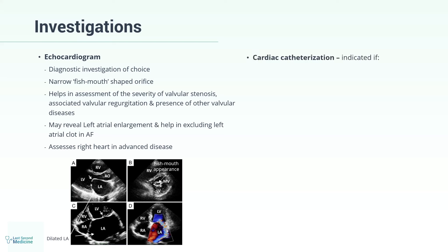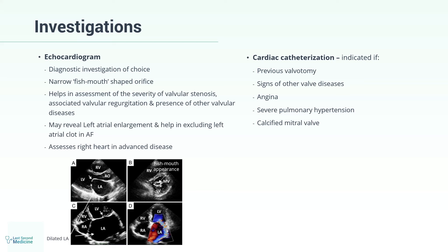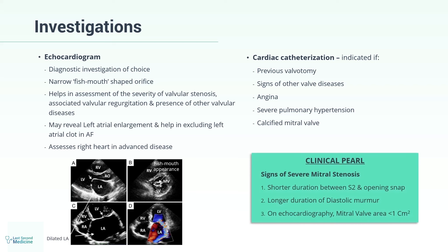Cardiac catheterization is not necessary for the diagnosis, but is indicated if there is previous valvotomy, signs of other valve diseases, angina, severe pulmonary hypertension, or a calcified mitral valve. As an exam pearl, features of severe stenosis include a shorter distance between S2 and the opening snap, a longer duration of diastolic murmur, and on echocardiography, a mitral valve area less than 1 square centimeter.